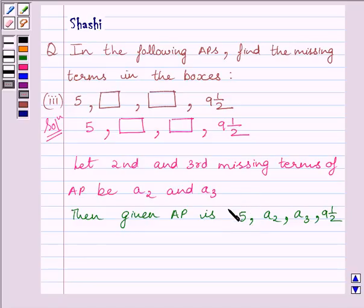Clearly we can see that the first term a equals 5, and the 4th term equals 9½.